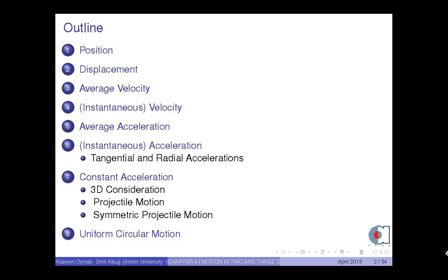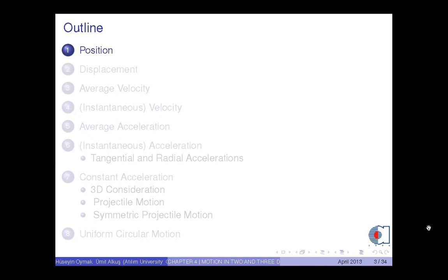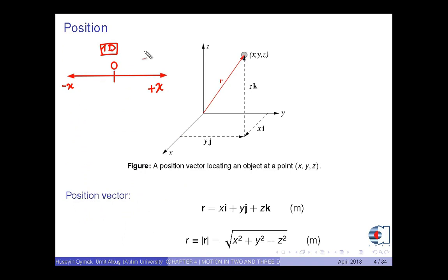Okay, let's start with position. Recall that in Chapter 2, we denote the position of an object moving along a straight line at any time t, according to an origin, by x of t. And we had only two directions, namely plus and minus.